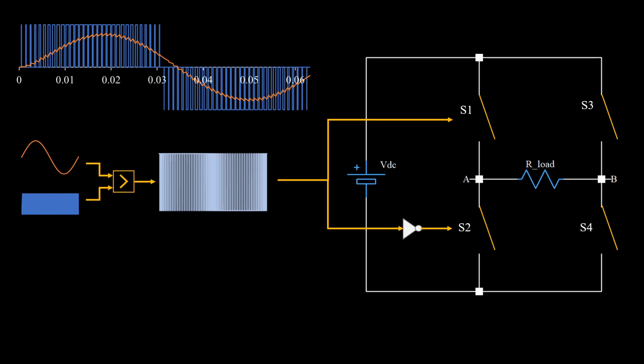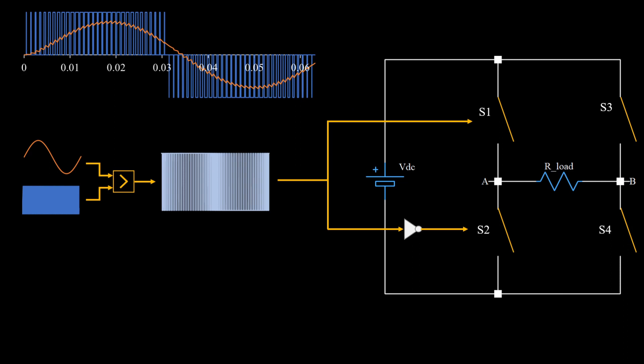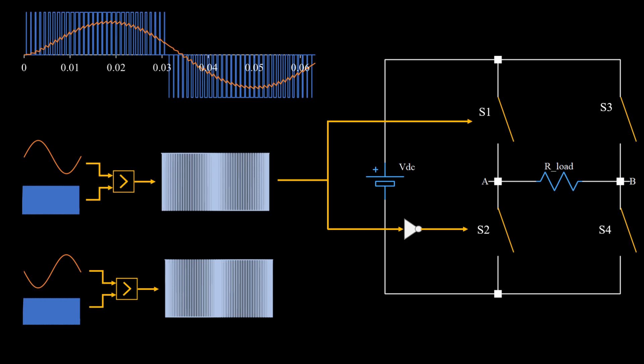This is because we can never have S1 and S2 on at the same time. Otherwise, it will lead to short circuiting the DC source also called as shoot through. We should always avoid this state. Now for switches S3 and S4, we will invert the sine wave and compare it with the ramp. And this switching pattern will apply to S3 and give the complementary to S4. All this will get very clear in just a moment.